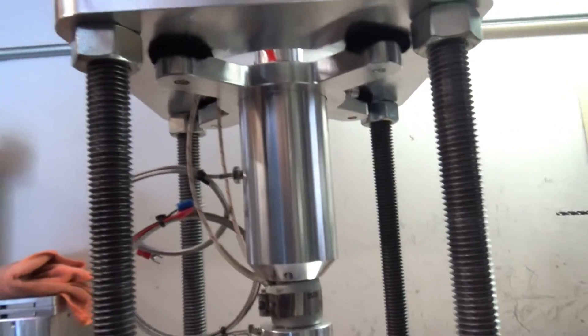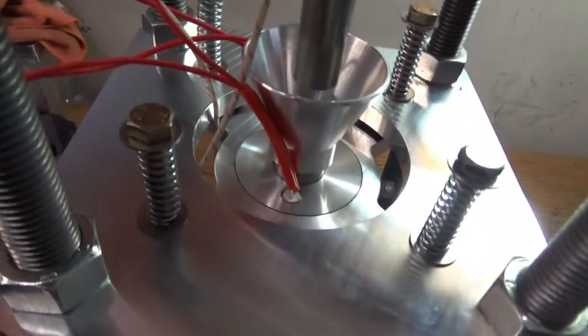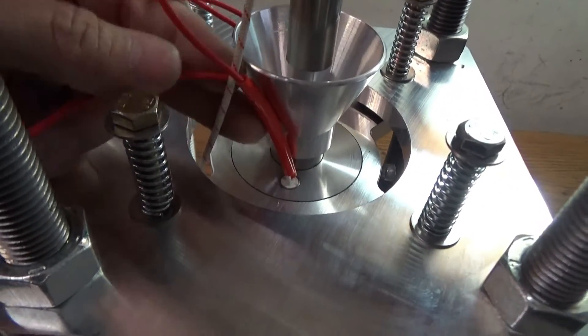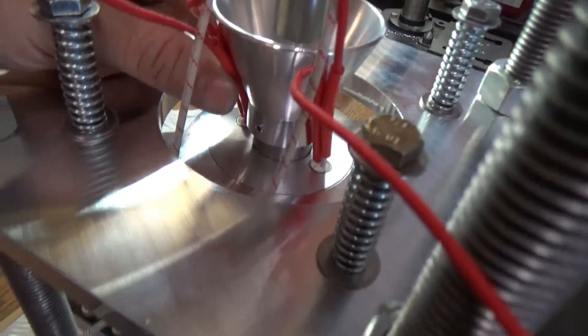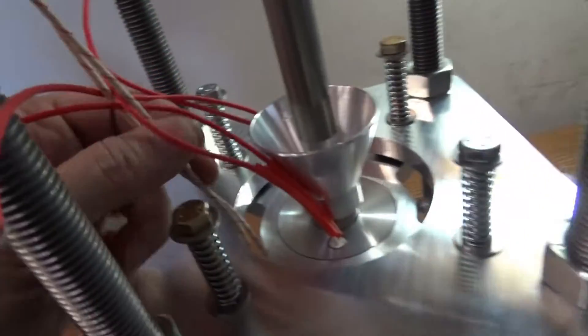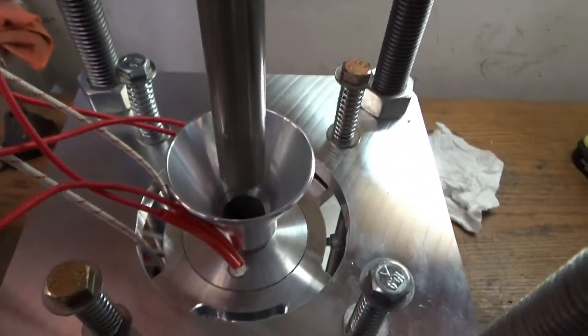We've got it mounted to our mount here. We've got our heater tubes—dual heater tubes on the main chamber here—and then this is the wiring for the band heater.